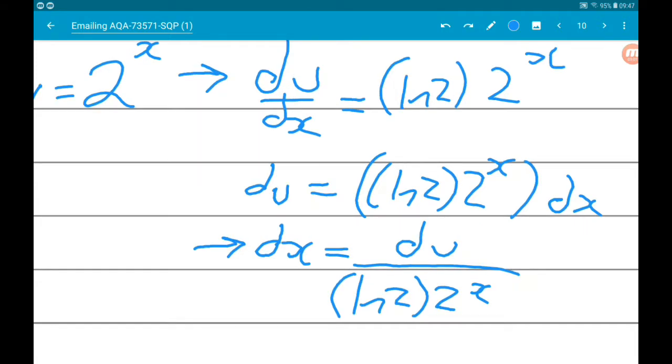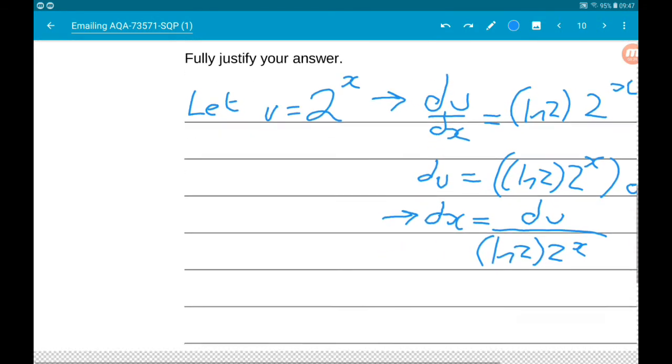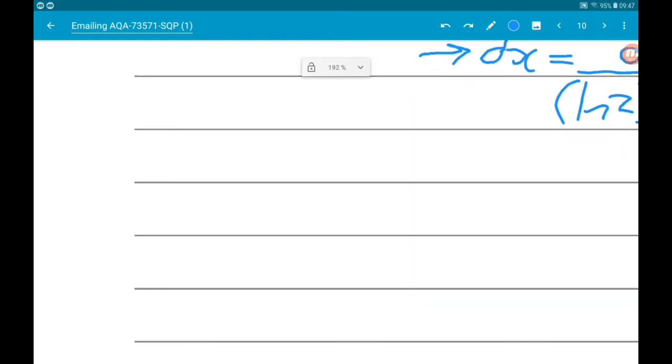Okay, so at this point we know what u is in terms of x. We know what dx is in terms of du and u. The other thing we need to do is change the limits of the integral, 0 and 1. So 0 and 1 are in terms of x, so we need to find the values of u.